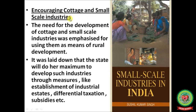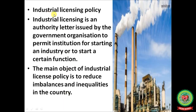Encouraging cottage and small scale industries: the need for development of cottage and small scale industries was emphasised as a means of rural development. The state was to develop such industries through measures like establishment of industrial estates, differential taxation, and subsidies. Industrial licensing policy: industrial licensing is an authority letter used by government to permit institutions for starting an industry or a certain function. The main objective of industrial licensing policy is to reduce imbalances and inequalities in the country.